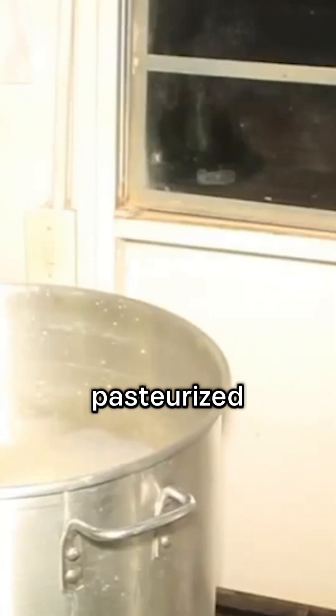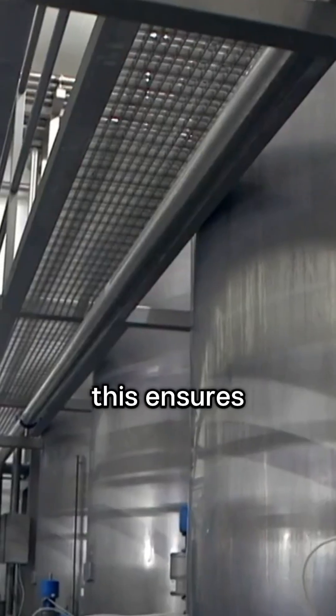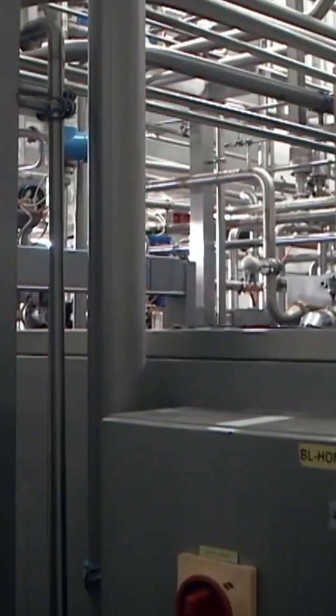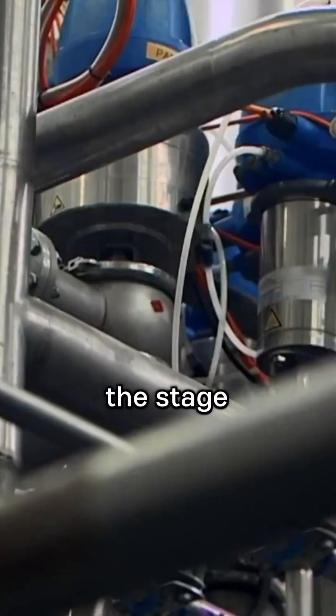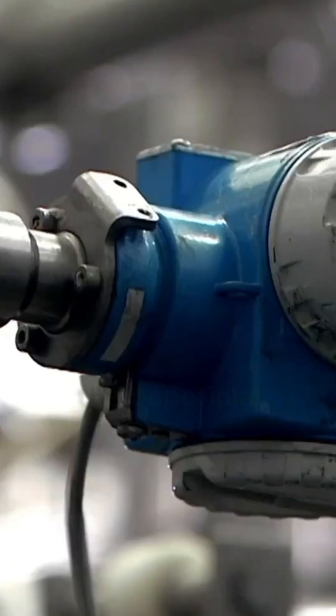Once collected, the milk is pasteurized—heated to a high temperature to destroy harmful bacteria. This ensures safety and consistency. Pasteurization also clears the stage, preparing the milk for the beneficial bacteria that will soon transform it. Think of it as wiping a whiteboard clean before writing something new. The milk becomes a blank canvas, ready for the masterpiece to come.